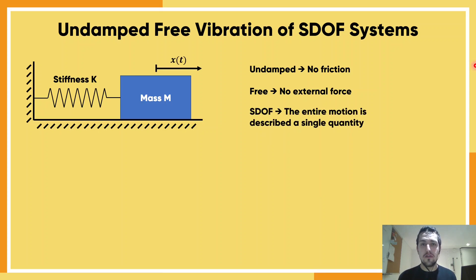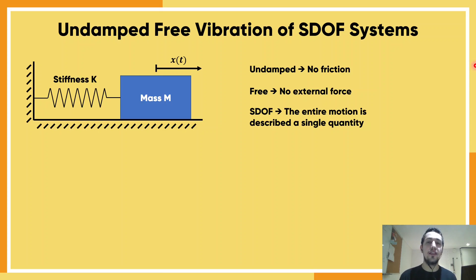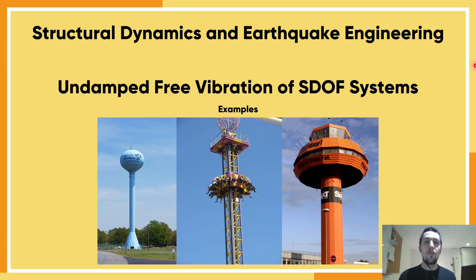SDOF stands for single degree of freedom, and just means that the entire motion of the system could be described by a single quantity — in this case, the displacement of the mass. So if we go back to the title, we can see three examples of systems that could be described as single degrees of freedom.